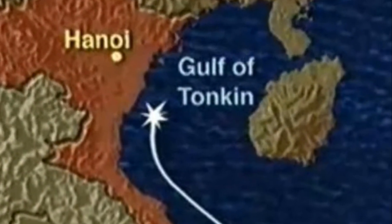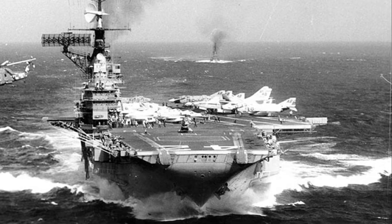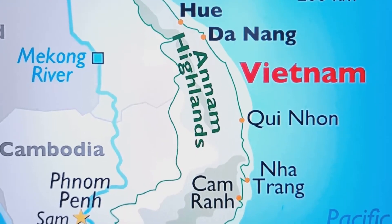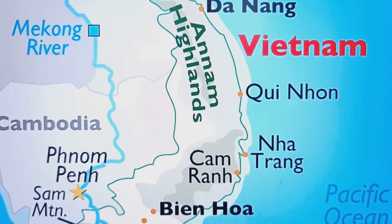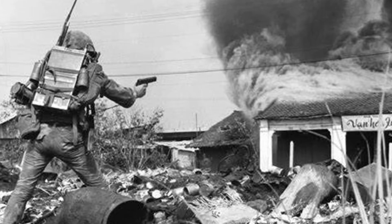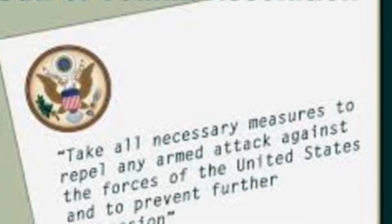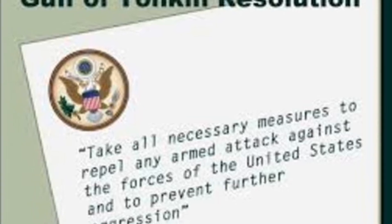The Gulf of Tonkin incident, which occurred in 1964, was a pivotal moment that led to the escalation of U.S. involvement in Vietnam. This incident involved two separate confrontations between North Vietnam and the United States in the waters of the Gulf of Tonkin. The U.S. government used these confrontations as a justification for escalating military involvement in Vietnam. The Gulf of Tonkin Resolution, passed by Congress, gave President Johnson the authority to assist any Southeast Asian country whose government was considered to be jeopardized by communist aggression.